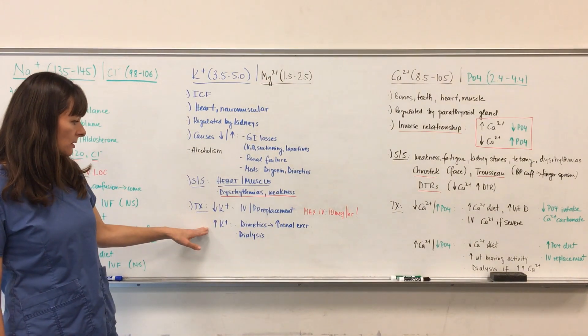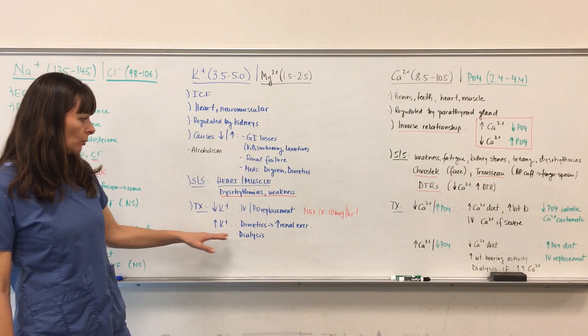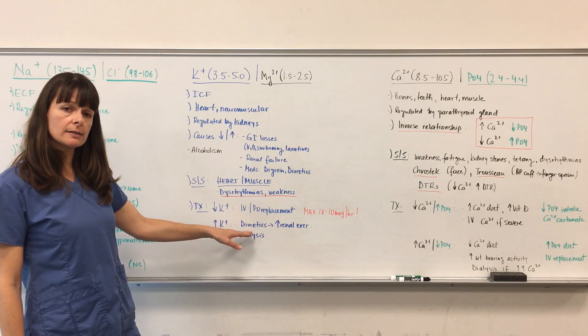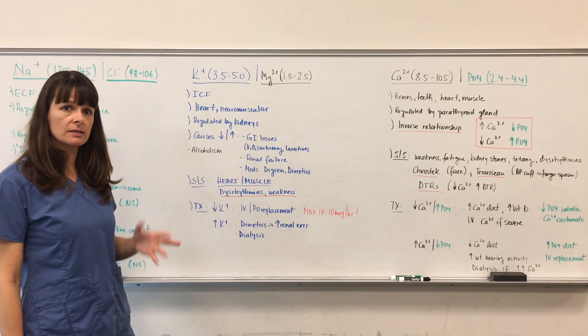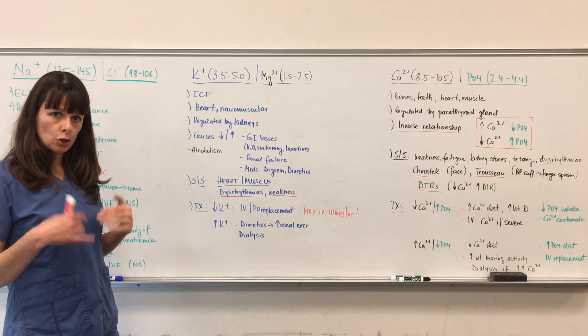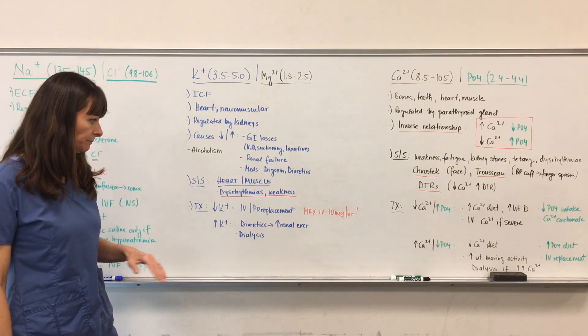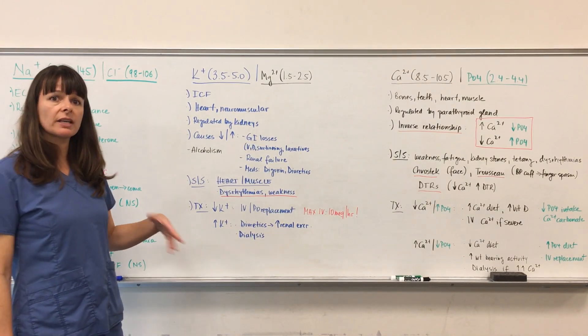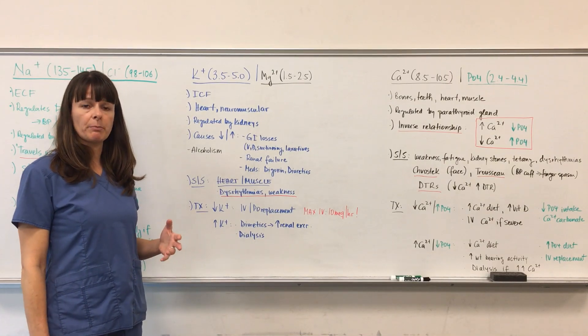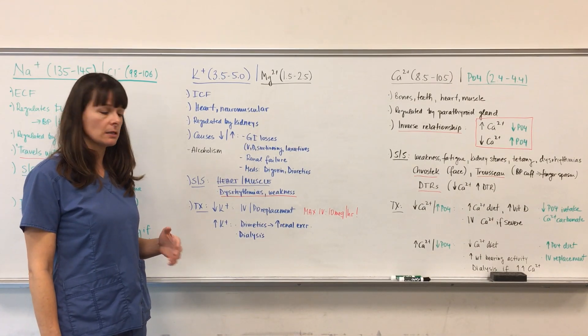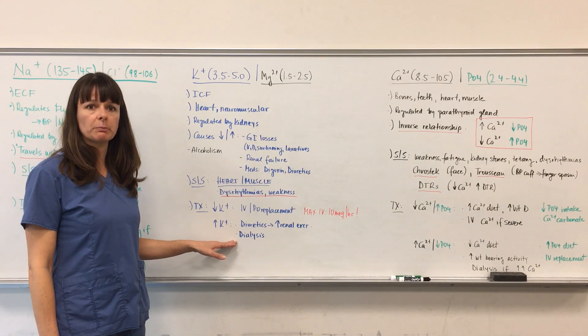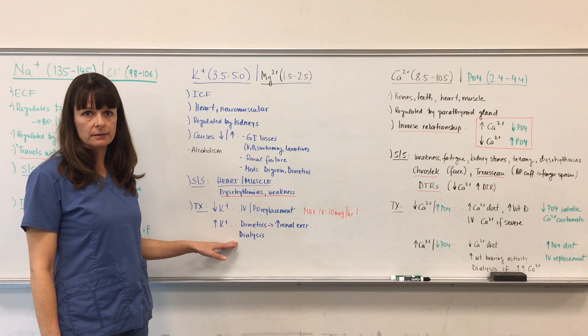If the potassium is too high, we're going to give the patient diuretics, potassium-wasting diuretics, that will stimulate the kidney to excrete more potassium. If that's not working, if the kidneys are not working, for example in a patient with end-stage renal disease, then we'll have to filter the potassium out by means of dialysis.